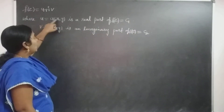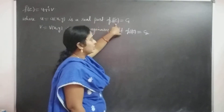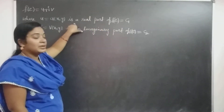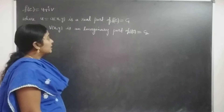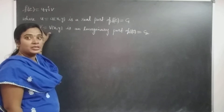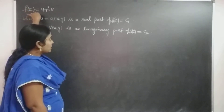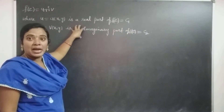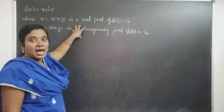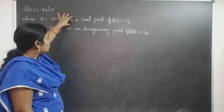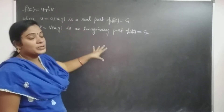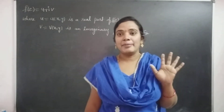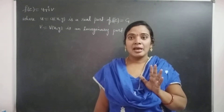Here u equal to u(x, y) is the real part of f(z), let it be c1 constant — that is one family of curves. The real part of f(z) is one family and the imaginary part of f(z) is another family. These two families' slopes — that is, the product of the slopes of these two families — must equal minus one for the two families to be orthogonal.